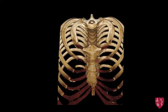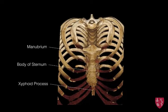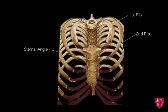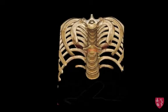Here, we can see that the manubrium is located superior to the body of the sternum, while the xiphoid process is located inferior. Additionally, we can see that the first rib attaches on the lateral aspects of the manubrium, while the second rib attaches at the sternal angle between the junction of the manubrium and the body of the sternum.